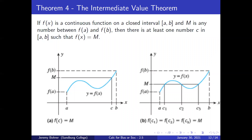Theorem 4: The Intermediate Value Theorem. If f(x) is a continuous function on a closed interval [a, b], and M is any number between f(a) and f(b), then there is at least one number c in the interval [a, b] such that f(c) = M. This is illustrated by the images below: for some value M between f(a) and f(b), if the function is continuous, there is at least one place where the function will cross the line y = M.